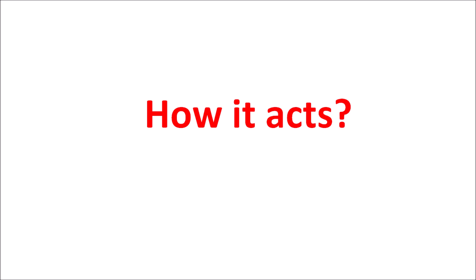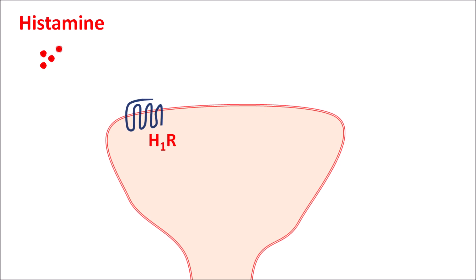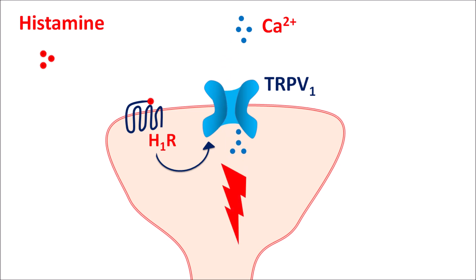Now let us see how this drug acts, though the exact mechanism is not fully known. Histamine plays an important role in the itching response — it can act on nociceptive neurons which are equipped with H1 receptors. These neurons are also equipped with TRPV1 channels, which are vanilloid receptors, so they can produce excitation of the neurons. When histamine acts on H1 receptors, they are activated, further sensitizing the TRPV1 channels, allowing calcium to enter through them, resulting in excitation and depolarization of the neurons, producing the itching response.